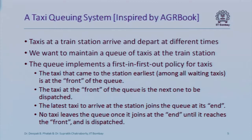Now we'll implement the full taxi queuing system. Taxis arrive and depart at different times at a train station. We maintain a queue where the taxi that arrived earliest is at the front and is dispatched next. The taxi that arrived latest joins at the end and stays until it reaches the front and is dispatched.